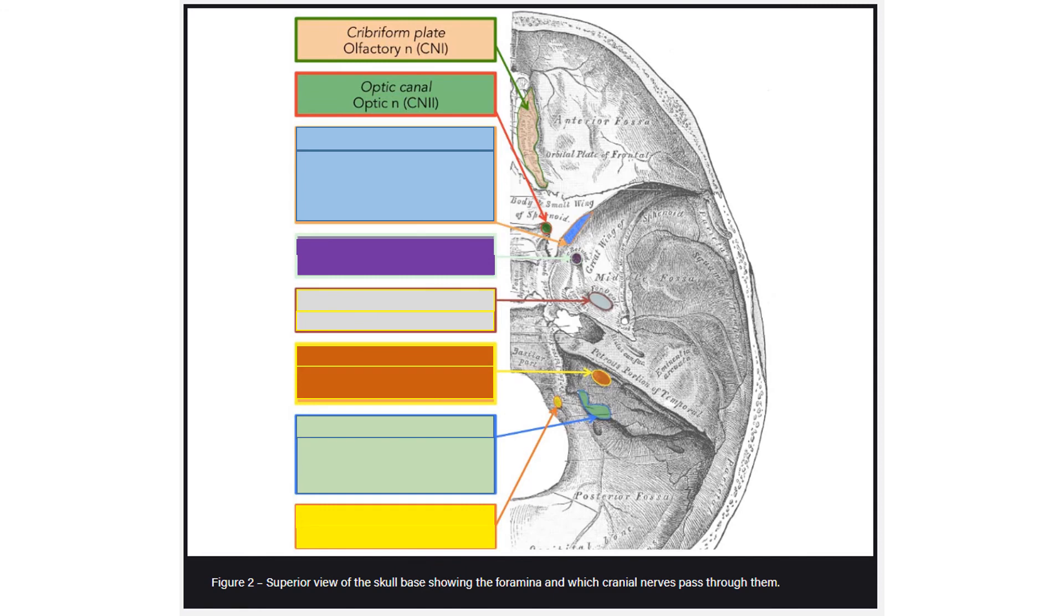The third is the superior orbital fissure through which the oculomotor nerve, trochlear nerve, ophthalmic nerve, and abducens nerve all pass. Note that the ophthalmic nerve is the first branch of the trigeminal nerve.